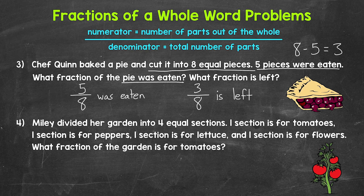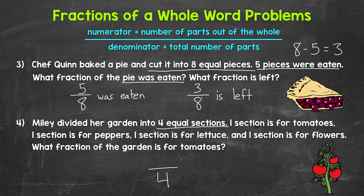Lastly, let's move on to number four, where Miley divided her garden into four equal sections. One section is for tomatoes, one for peppers, one for lettuce, and one for flowers. What fraction of the garden is for tomatoes? The denominator is the total number of sections — four. So our denominator is four. We want the fraction for tomatoes, and tomatoes go in one section. So one out of four sections is for tomatoes. Our fraction: one fourth. One fourth of the garden is for tomatoes.